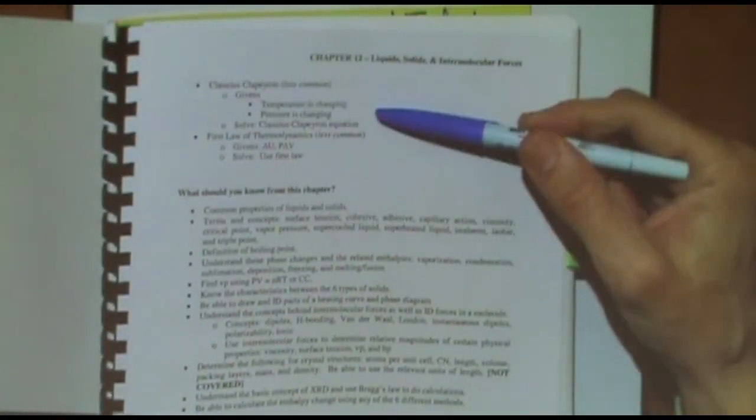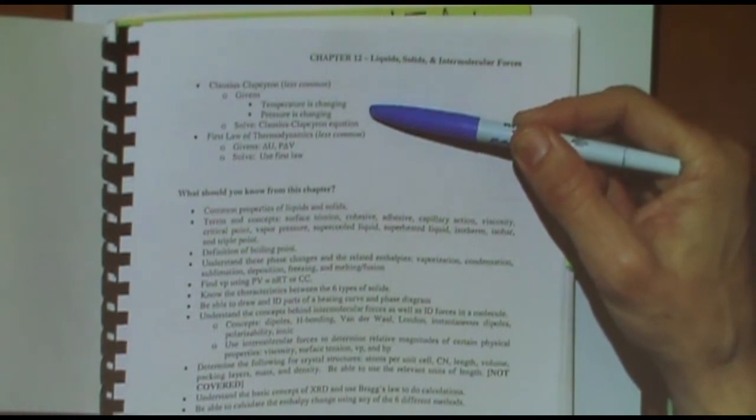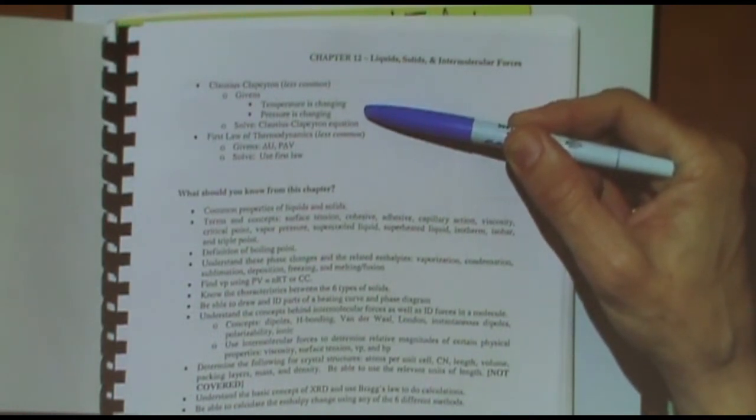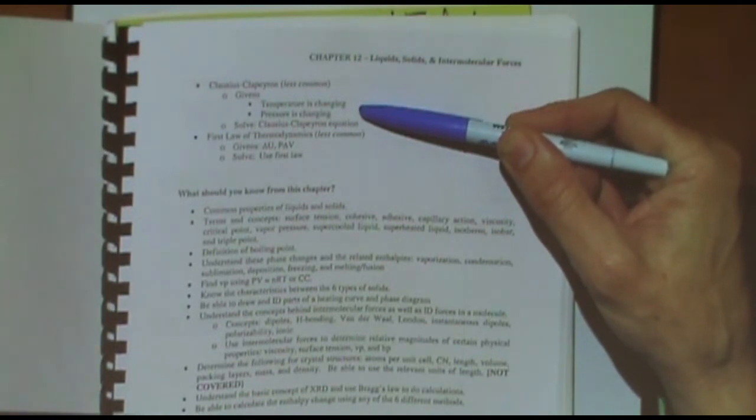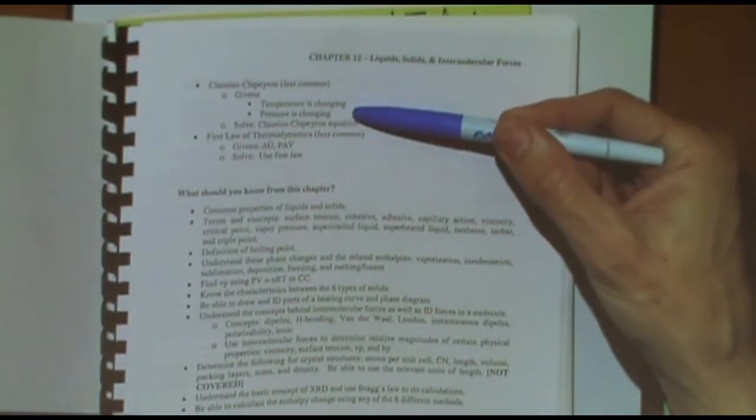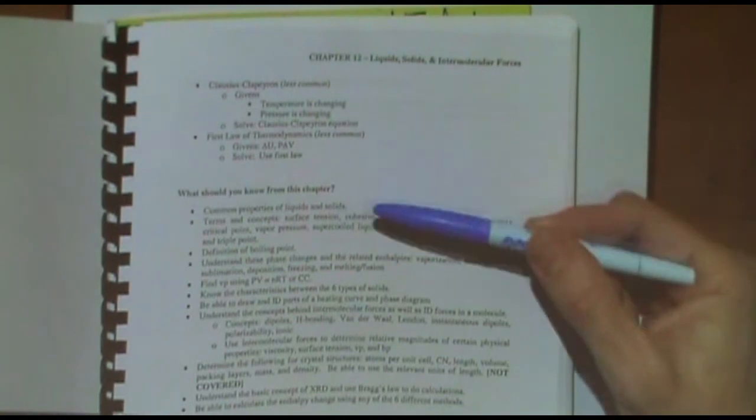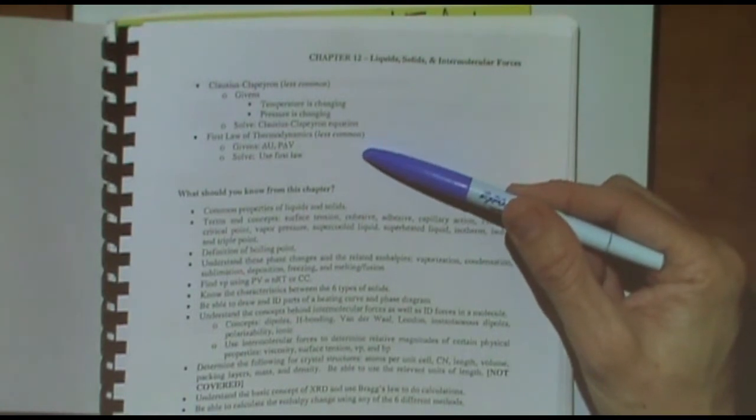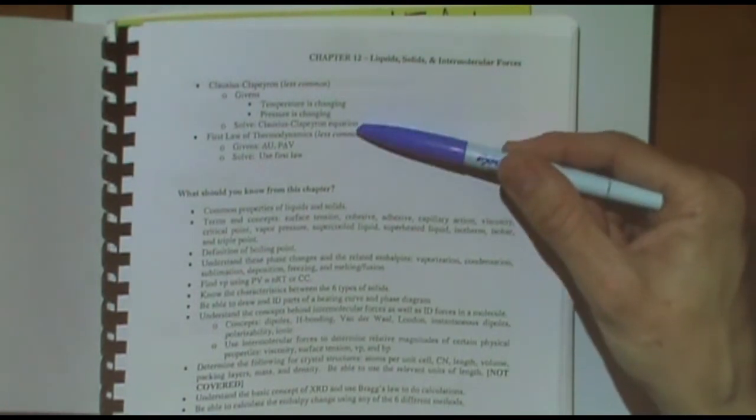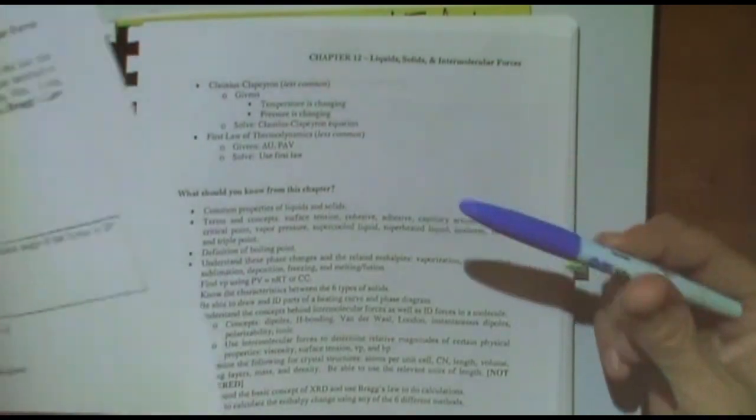Clausius-Clapeyron. We're going to do an example of this in a bit, but that's not for delta H of reaction. That's for delta H. What's the subscript? Vaporization. So this is for phase change. Delta H is not for reactions. And then the first law of thermodynamics, occasionally, but it's less common that you use that to find a delta H. So these second, these last two here are more rare.